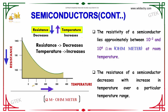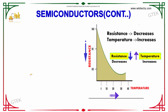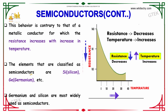Here is the temperature axis and you are able to see the resistance here. Once the temperature increases, the resistance starts decreasing — this is depicted in this graph. This behavior is contradictory to that of a metallic conductor, for which the resistance increases with increase in temperature.